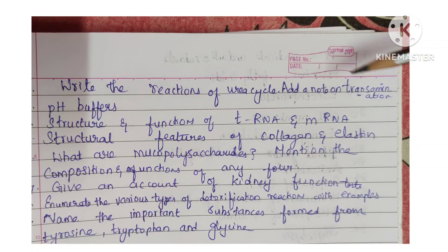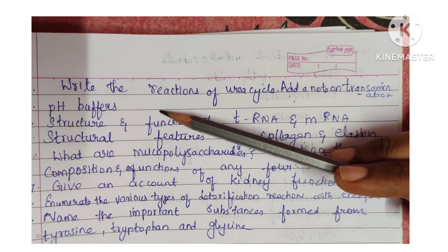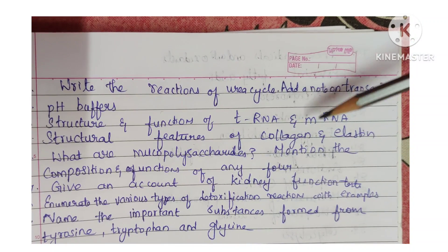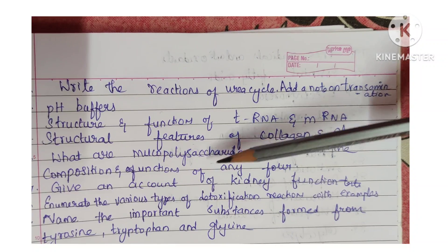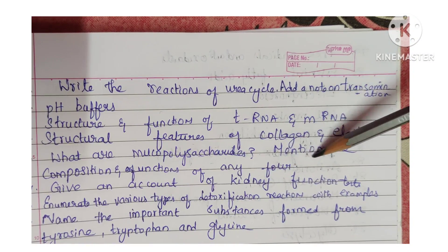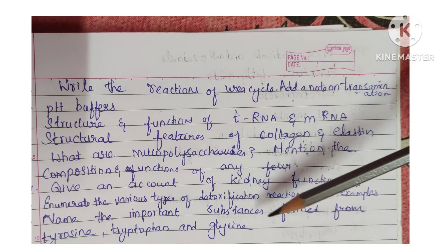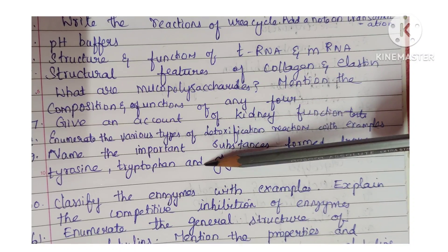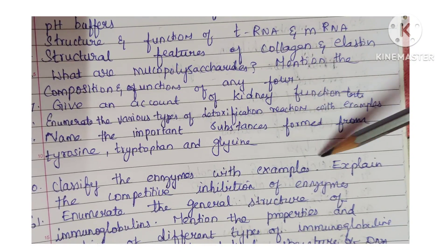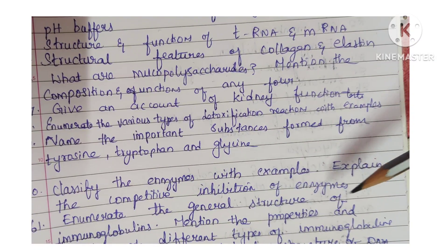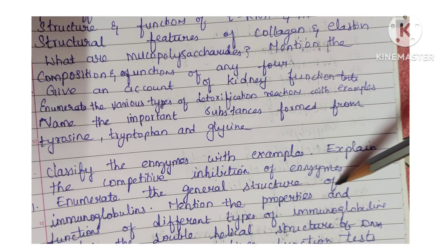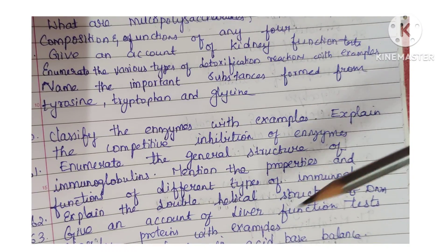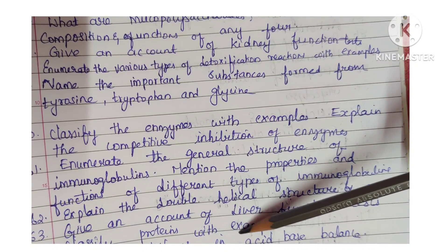More Biochemistry questions: Reactions of the Urea Cycle with a note on Transamination, pH Buffers, Structure and Function of tRNA, Transfer RNA and mRNA (Messenger RNA), Structural Features of Collagen and Elastin, Mucopolysaccharides, Compositions and Functions of Nucleotide-4, Kidney Function Test, Various Types of Detoxification Reactions with Examples, Important Substances Formed from Tyrosine, Tryptophan and Glycine, Classify the Enzymes with Examples, Competitive Inhibition of Enzymes, General Structure of Immunoglobulins with properties and functions of different types, Double Helical Structure of DNA, Liver Function Test, and Classify Proteins with Examples.